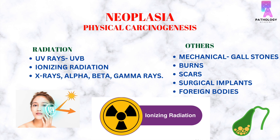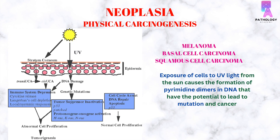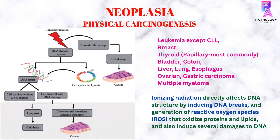Other causes of physical carcinogenesis include mechanical factors like gallstones, burns, scars, surgical implants, or foreign bodies. Examples include melanoma, basal cell carcinoma, and squamous cell carcinoma, in which exposure to UV light from the sun causes formation of pyrimidine dimers in DNA that have the potential to lead to mutation and cancer. Other examples are cancers caused by ionizing radiation, which directly affects DNA structure by inducing DNA breaks and generation of reactive oxygen species that oxidize proteins and lipids and also induce several damages to the DNA.